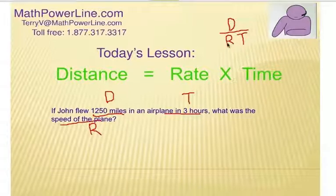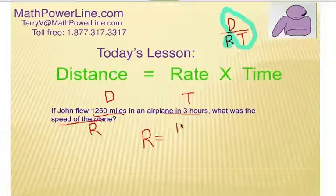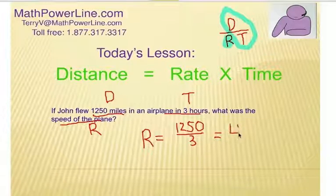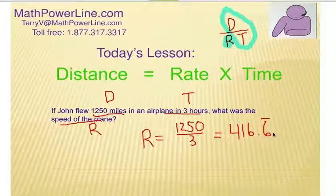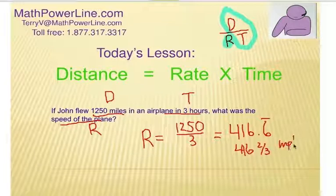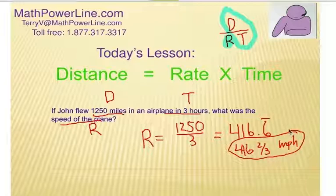All right, look up at the visual model here. R is unknown, so I pretty much ignore it or block it out. And then I look at what's left over, D and T. Notice it's D over T. We can think of this line now as a division line, so distance divided by time. So the rate is 1,250 miles divided by 3, which is 3 hours. Divide that out, which is 416 point repeating sixes miles per hour. Or we can say 416 and 2 thirds if we want to convert it to a fraction. Okay, don't forget your label, miles per hour.